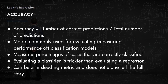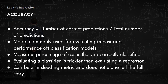Accuracy measures the number of correct predictions over the total number of predictions. For example, if you have 100 predictions, how many are correct — that is accuracy, technically speaking. It's a metric commonly used for evaluating classification models and measures the percentage of cases correctly classified. However, it's not very easy to evaluate a classifier based on just this one measure.